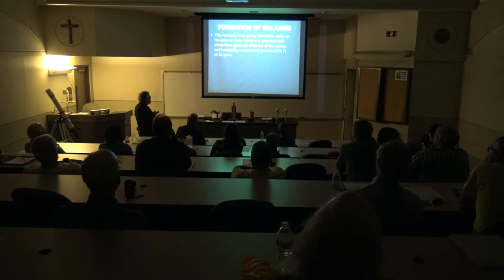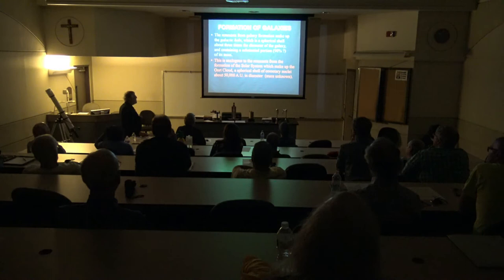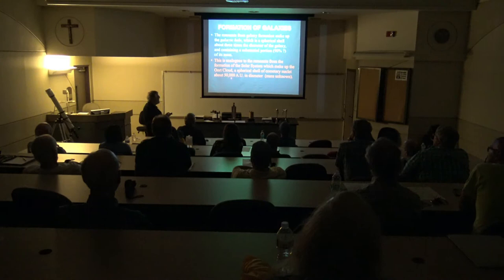There's material left over — a galactic halo that might contain 90% of the mass of a galaxy. For the solar system, there's the spherical shell of cometary nuclei 50,000 astronomical units from the sun — the Oort cloud, where we believe comets come from.